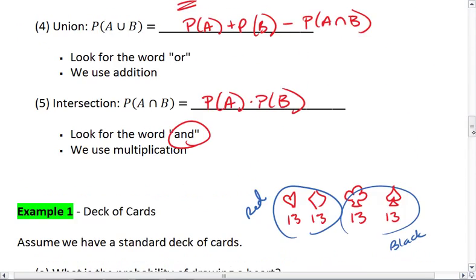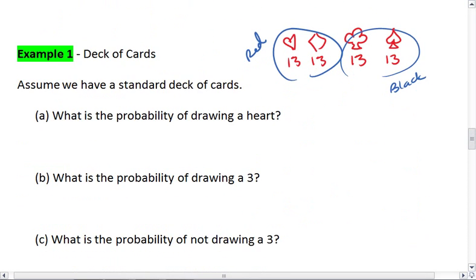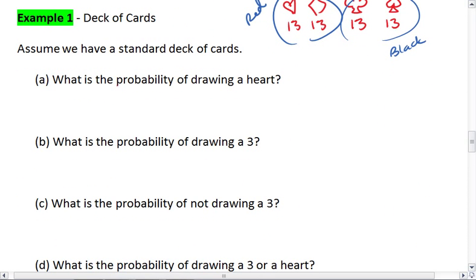Going back down to this example, we want to know the probability of drawing a heart. Well, we have 13 hearts in our deck, so the probability of a heart is going to be 13 over a total of 52 cards, or one-fourth or 0.25.